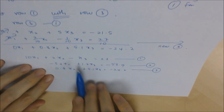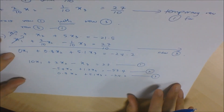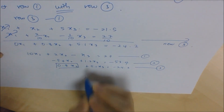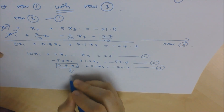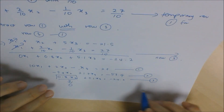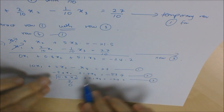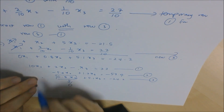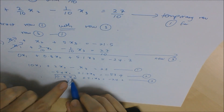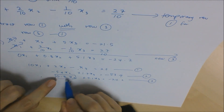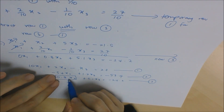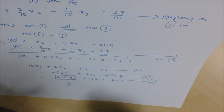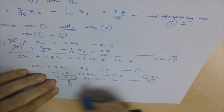Now we have three updated equations but haven't completed forward elimination — we still need to eliminate x2 from row 3. If you use the first row, x1 will reappear in the equation. But if you use the second row to eliminate x2, you can do so without introducing x1. So the correct choice is to use the second equation to eliminate x2 from the third row.